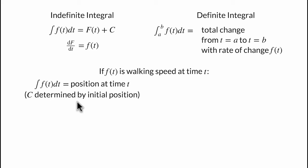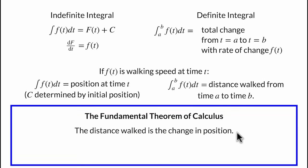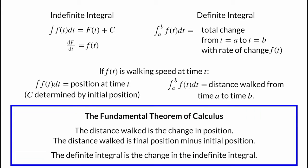Just knowing your walking speed doesn't give enough information to pin down your exact position. But when we know your initial position, or your position at time t equals 0, then we can determine the value of c. For the walking example, the definite integral is the total distance walked from time t equals a to time t equals b. The fundamental theorem of calculus is just a statement of this obvious fact: the definite integral is the change in the indefinite integral.